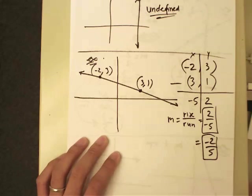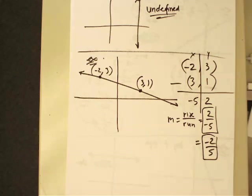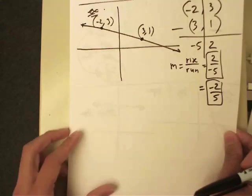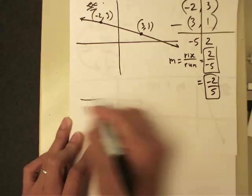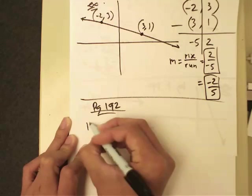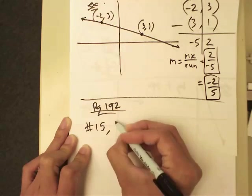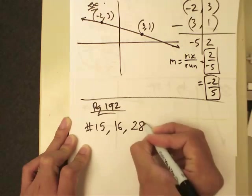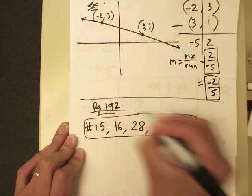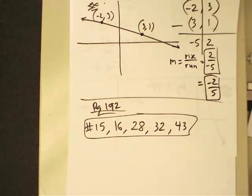Practice these problems. I want you to work on five problems before you come back to class tomorrow, because I will be checking them. Turn to page 192 in your textbook and work on numbers 15, 16, 28, 32, and 43. These five problems need to be done when you return.